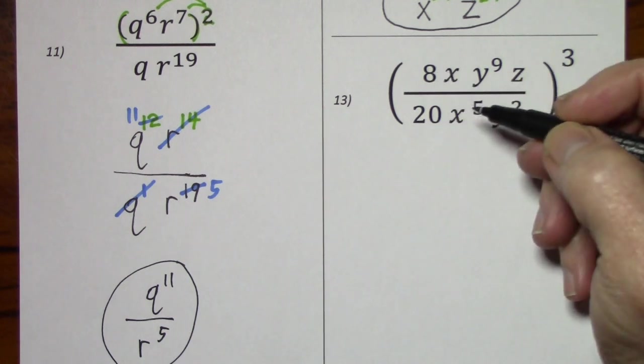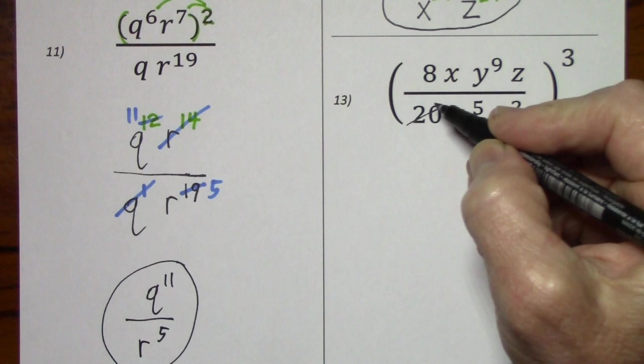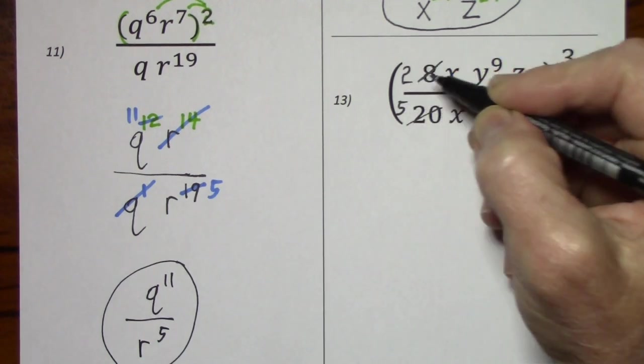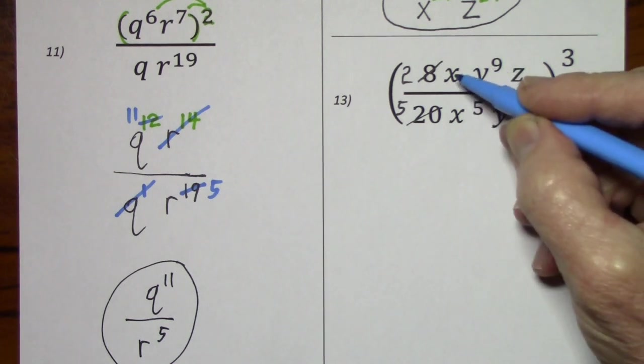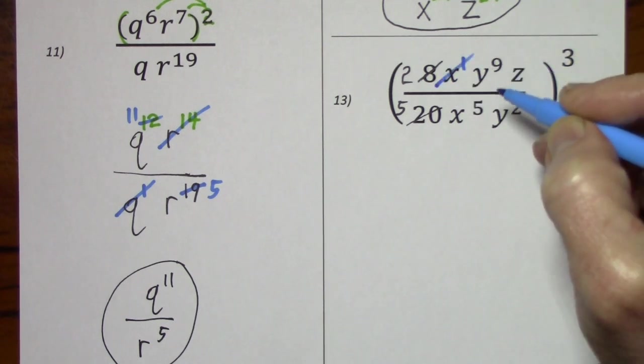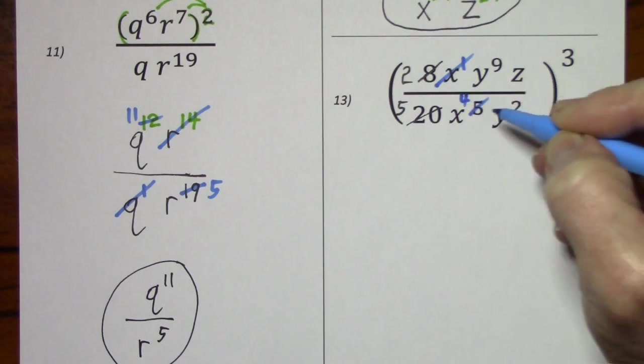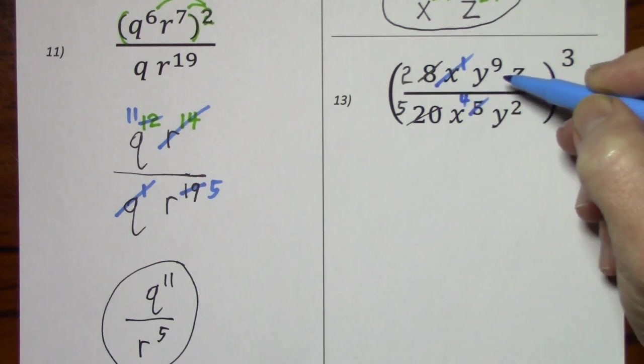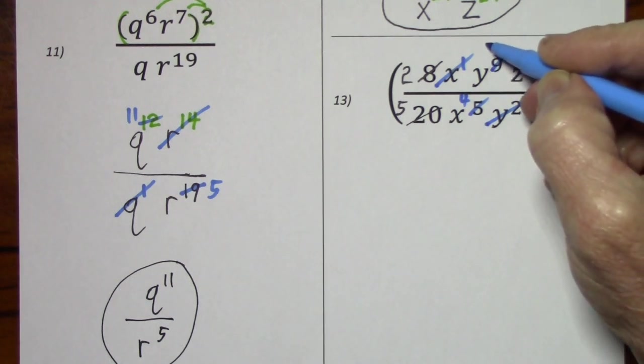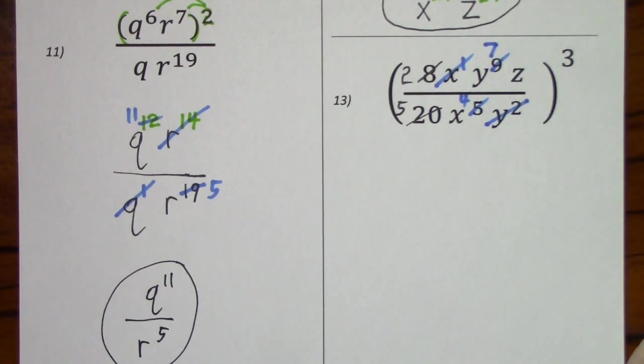So looking at the 8 and the 20, the greatest common factor is 4. Divide by 4 leaves you with 5, divide by 4 leaves you with 2. Looking at the x's, remember this is x to the 1st. I can cancel that out so long as I subtract 1, leaving x to the 4th. Looking at the y's, I cancel that out, subtract 2, left with 7. Z's, nothing to cancel, you're just stuck with that.